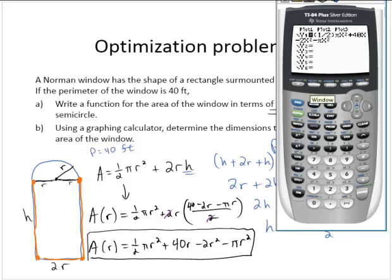The radius, x is the radius. A minimum value for the radius would be 0. And a maximum value, I'm just going to go to 10. Since the perimeter is 40, 10 seems to be a reasonable maximum. I'll use a scale of 1.